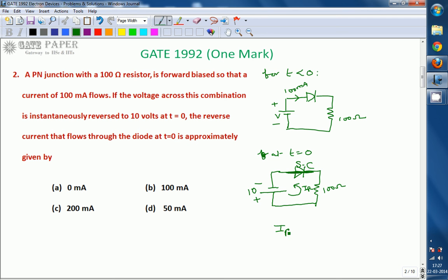So IR is V divided by R. So 10 volts divided by 100 ohms, which is 100 milliamperes.